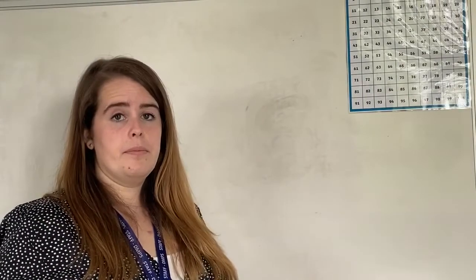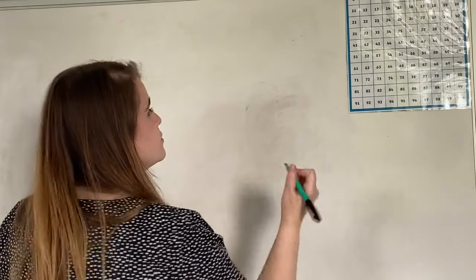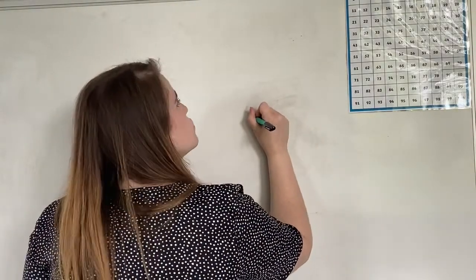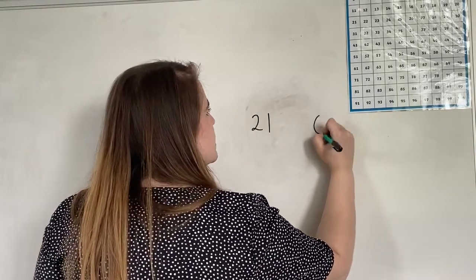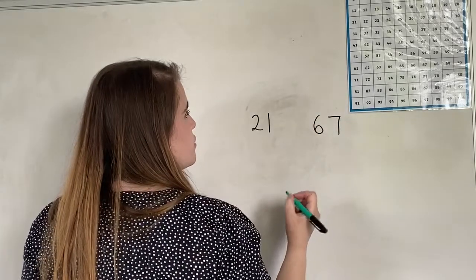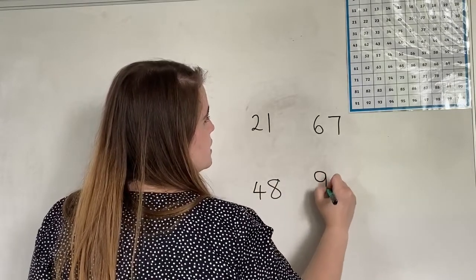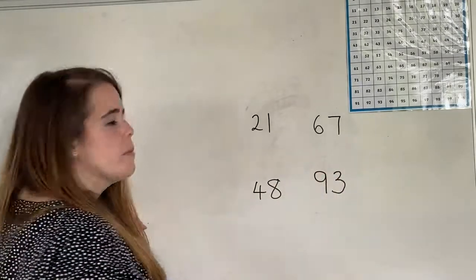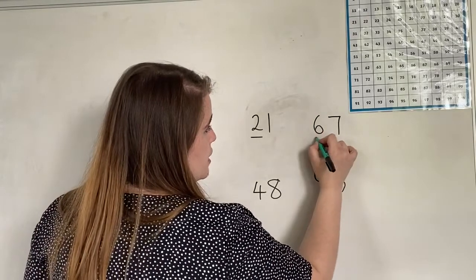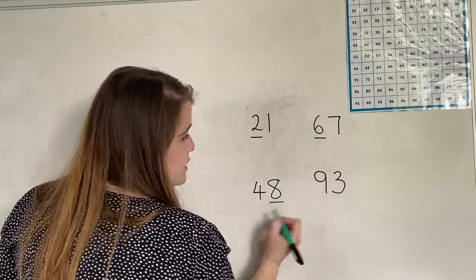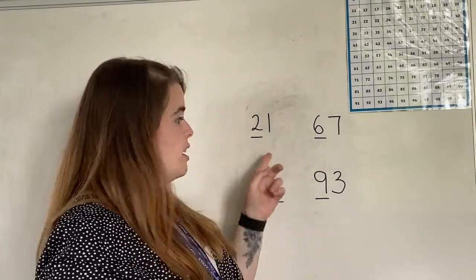I'm going to write four numbers down. Let's see if you can work out the value of the numbers that I'm underlining. We can try 21, 67, 48, and 93. I'd like you to tell me the value of the 2 in this one, the 6 in this one, the 8 in this one, and the 9 in this one. Pause the video and have a go at this now.